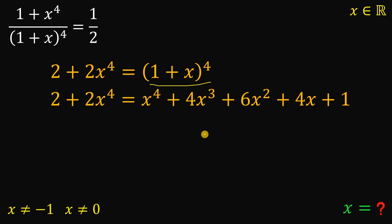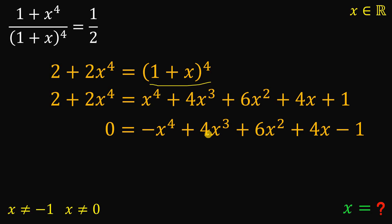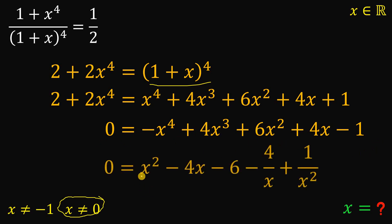Now combining like terms and equating to 0, we have negative x to the fourth power plus 4x cubed plus 6x squared plus 4x minus 1 equals 0. From here, we will use the fact that x is not equal to 0, because we will divide all terms by negative x squared. So if we divide all terms by negative x squared, we get x squared minus 4x minus 6 minus 4 over x plus 1 over x squared.